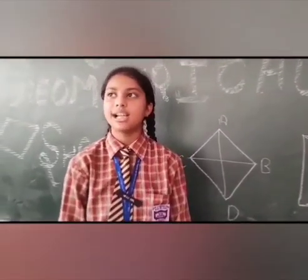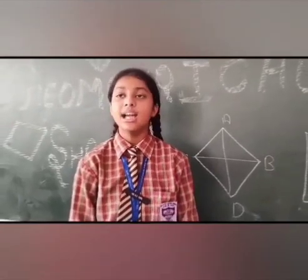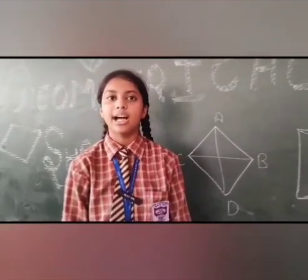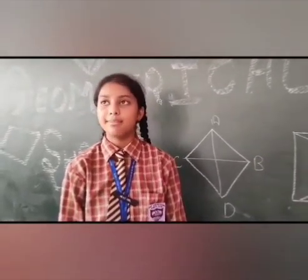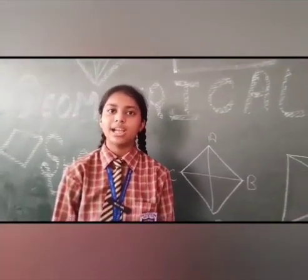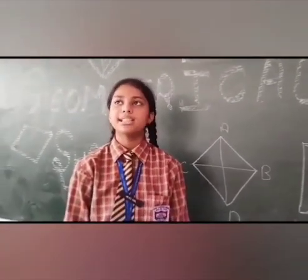Two dimensional figures lie on the x and y axis, and three dimensional figures lie on the x, y and z axis. Examples of two dimensional figures are rectangle, square, rhombus, and parallelogram.